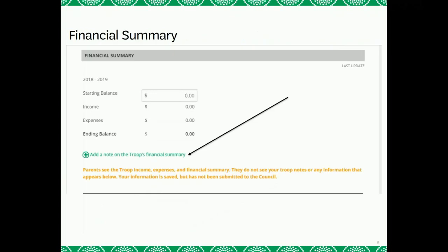After you have entered in your troop's Income and Expenses section, you can scroll down and view your troop's financial summary. This will automatically give you your troop's ending balance. If you would like to enter in a note for the council to see, you can click on the Add a Note on the Troop Financial Summary button.